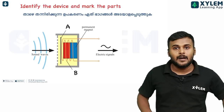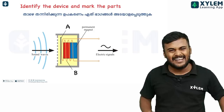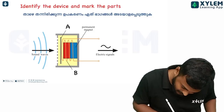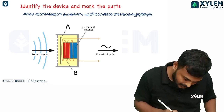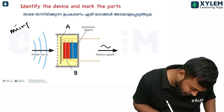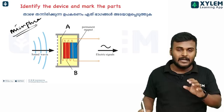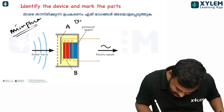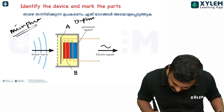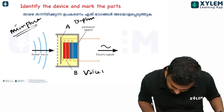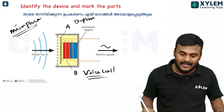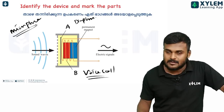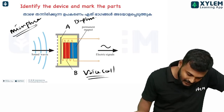A moving coil device is a microphone — mic. The parts of the microphone include the diaphragm and the voice coil. The microphone also has a permanent magnet. These are the key parts of a moving coil microphone.